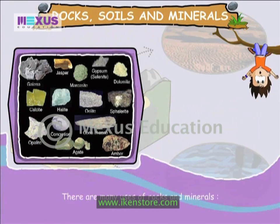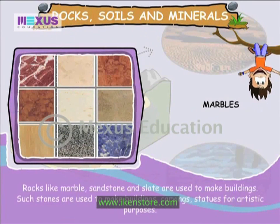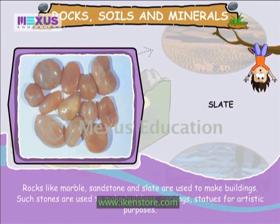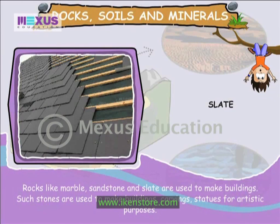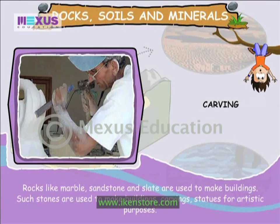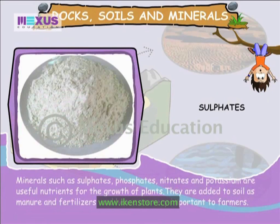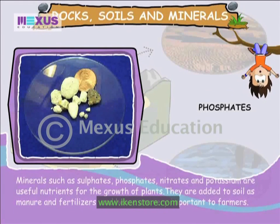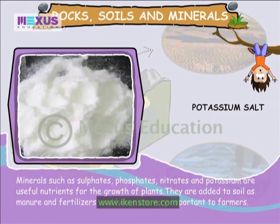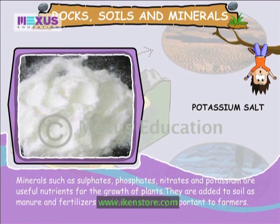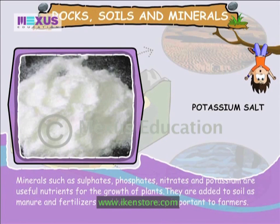There are many uses of rocks and minerals. Rocks like marble, sandstone and slate are used to make buildings, carvings and statues for artistic purposes. Minerals such as sulphates, phosphates, nitrates and potassium are useful nutrients for the growth of plants. They are added to the soil as manure and fertilizers, and hence are very important to farmers.